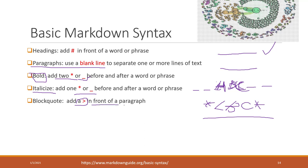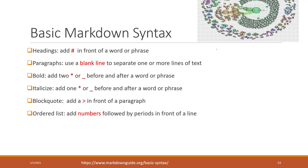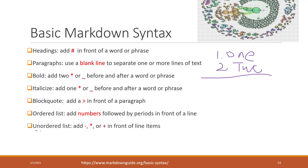You can use the greater-than symbol to indicate a block code — the output will look like a block code. You can also use numbers followed by a period to indicate an ordered list. For example, '1.' for item one, '2.' for item two, and so on.